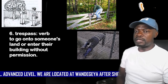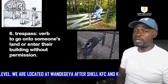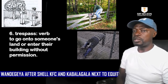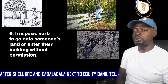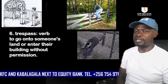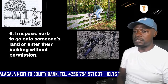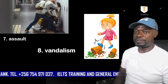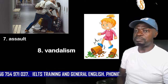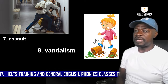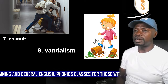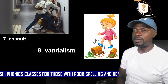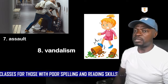Trespass — going into someone's land or their building without their permission, usually with the intent to do bad things like stealing — is also an example of juvenile delinquency. Assault, or beating other people, is related to bullying. Vandalism — destroying property at home or at school — is another example.